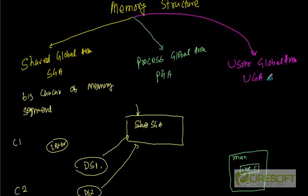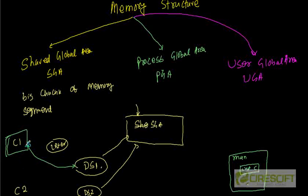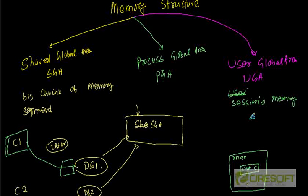The User Global Area is like when a user C1 opens some cursor, or writes a SELECT statement with an ORDER BY or GROUP BY clause. In that case it requires additional memory on which it is going to do sorting or fetch cursor data. That part is called UGA — this is session memory. Whatever memory is needed for a user session is reported as part of the User Global Area or UGA.